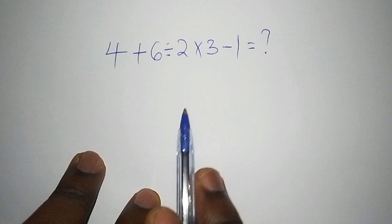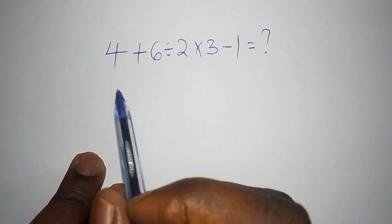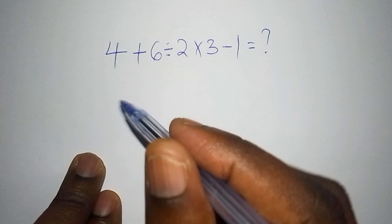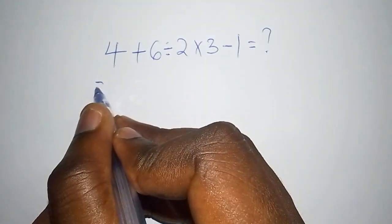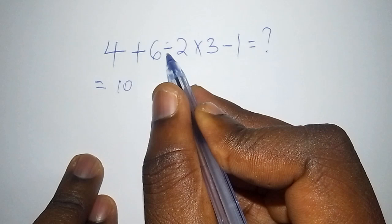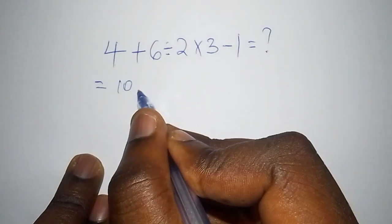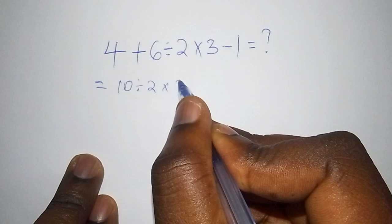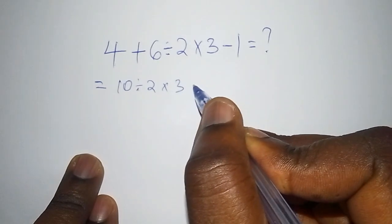But let's kick start some of the mistakes that people do. Now one can say that this one is 4 plus 6 and they say here the answer is 4 plus 6 is 10 then divide by 2 then multiply by 3 then from there you subtract from 1.